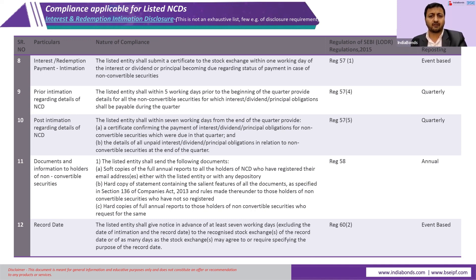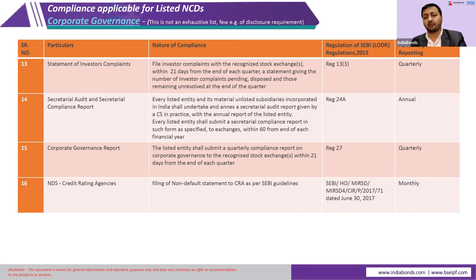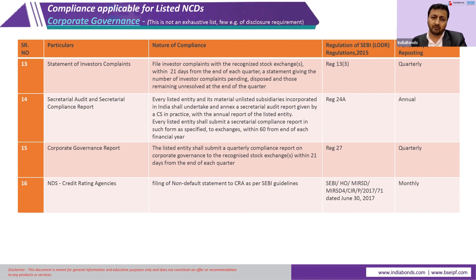The third bucket is interest and redemption — issuers must compulsorily inform the exchange of interest payment frequencies and redemption details. The fourth bucket is corporate governance: any credit rating change — whether downgraded or upgraded — must be reported to the exchange. Investor complaints must also be disclosed. While not all regulations have been covered, the critical values have been included. Companies must meet all these compliance obligations under the listed bond framework.